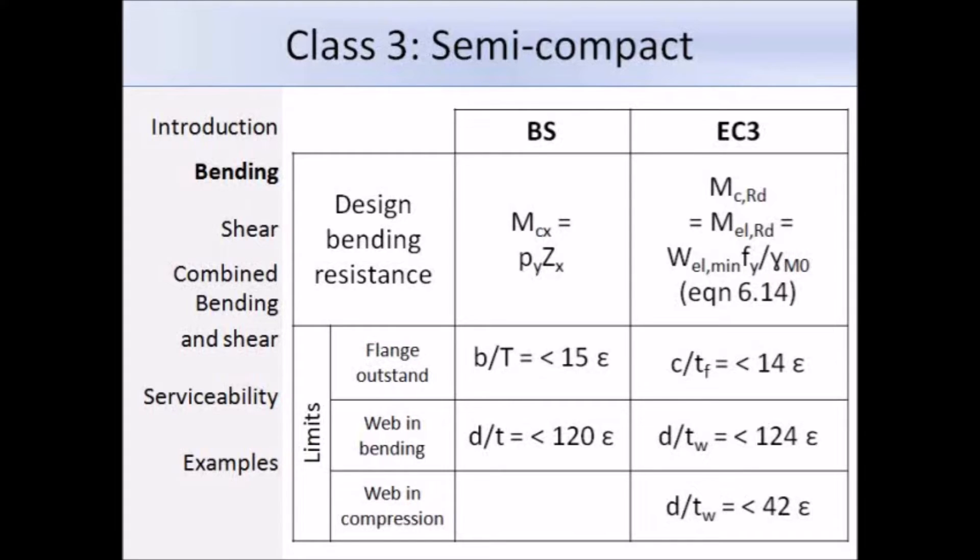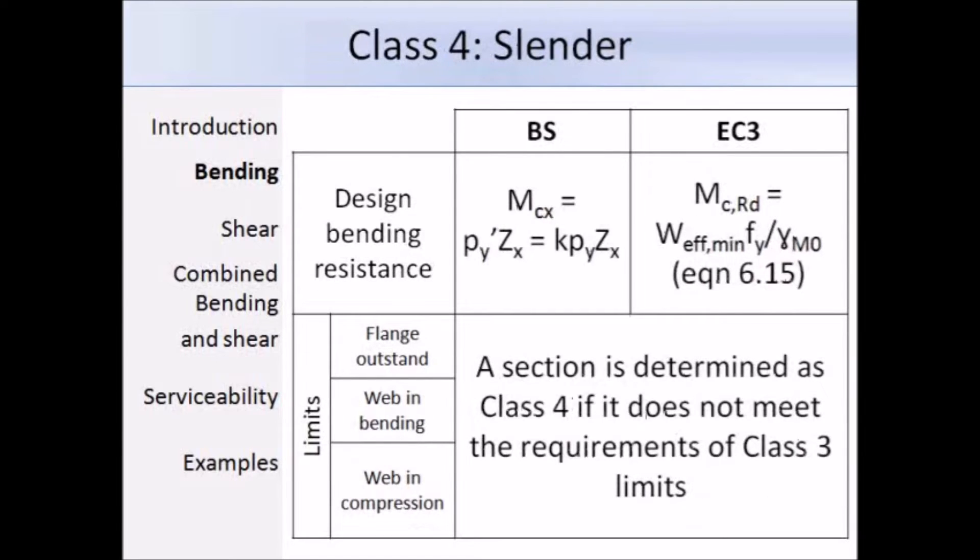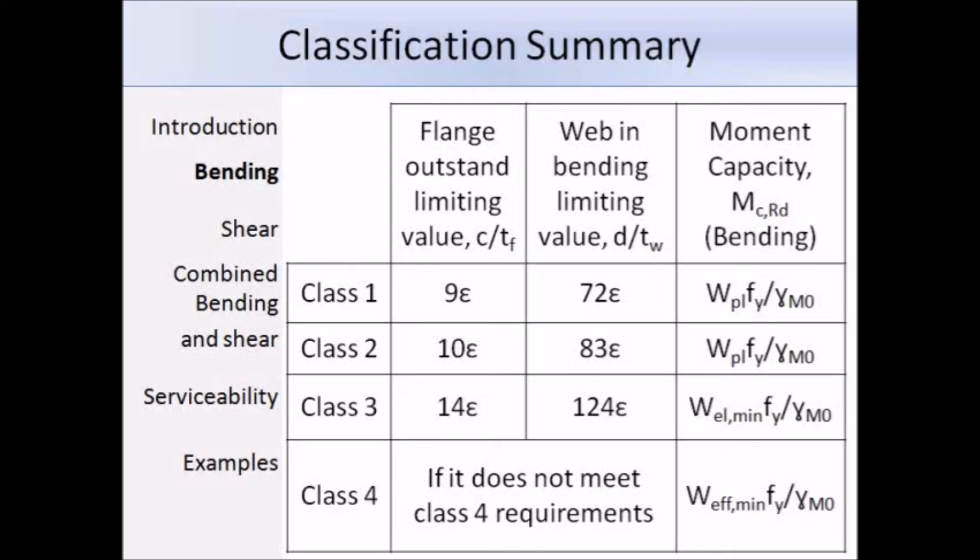Now we come to class 4, and a section is described in Eurocode as class 4 if local buckling will occur before the attainment of yield stress in one or more parts of the cross section. Just like 5950, Eurocode 3 classifies the section as class 4 if it doesn't meet the requirements of the class 3 limits. The design bending resistance is equal to the effective modulus Weff,min times the yield strength divided by a partial factor, and that's expression 6.15 in Eurocode 3.